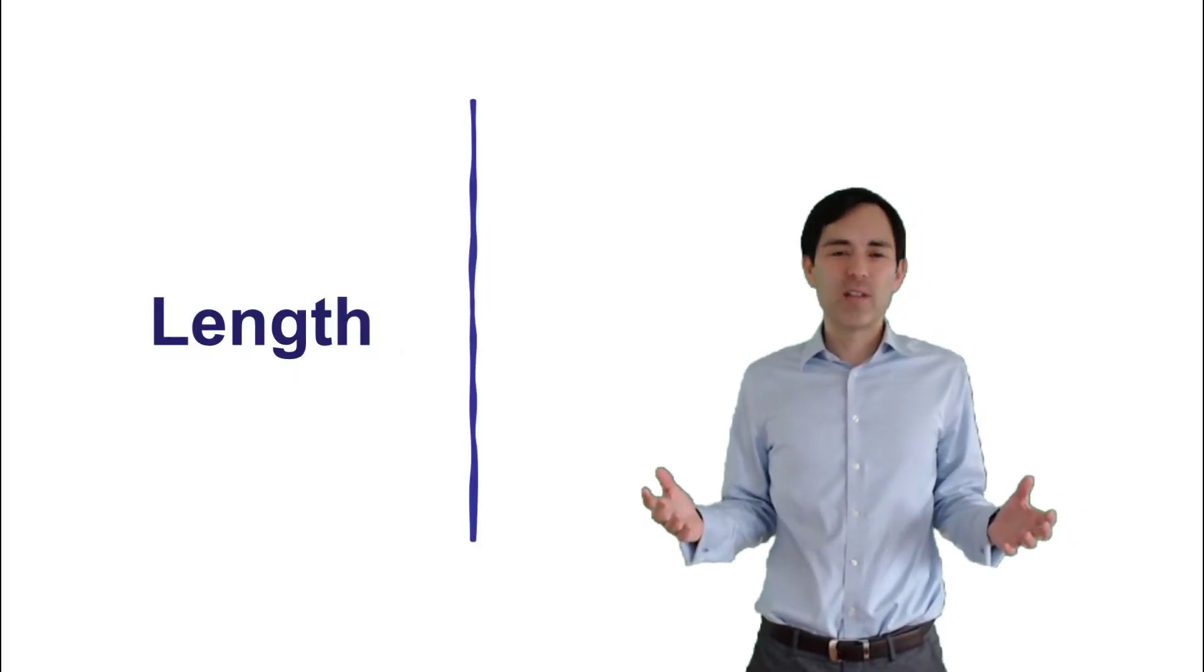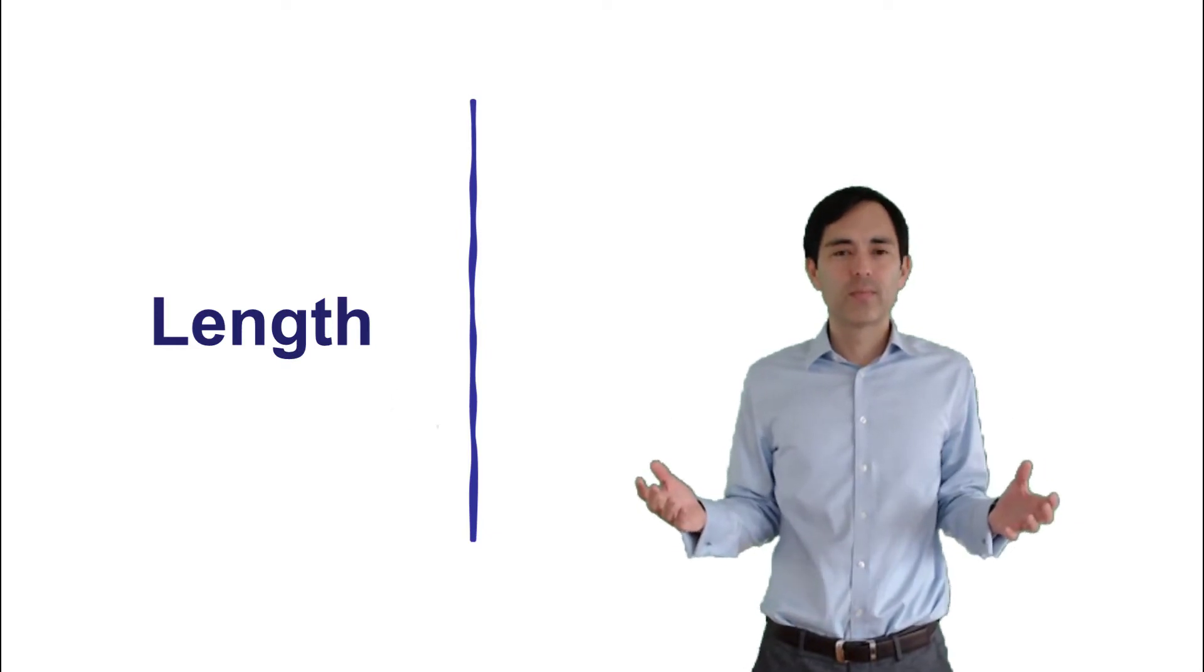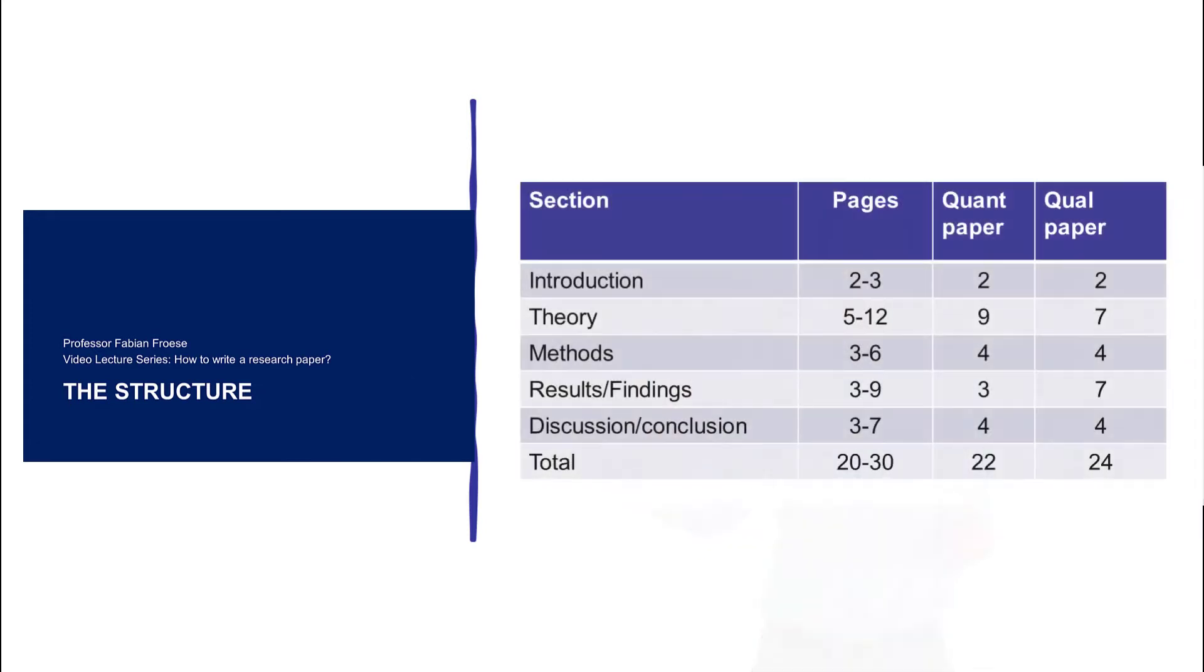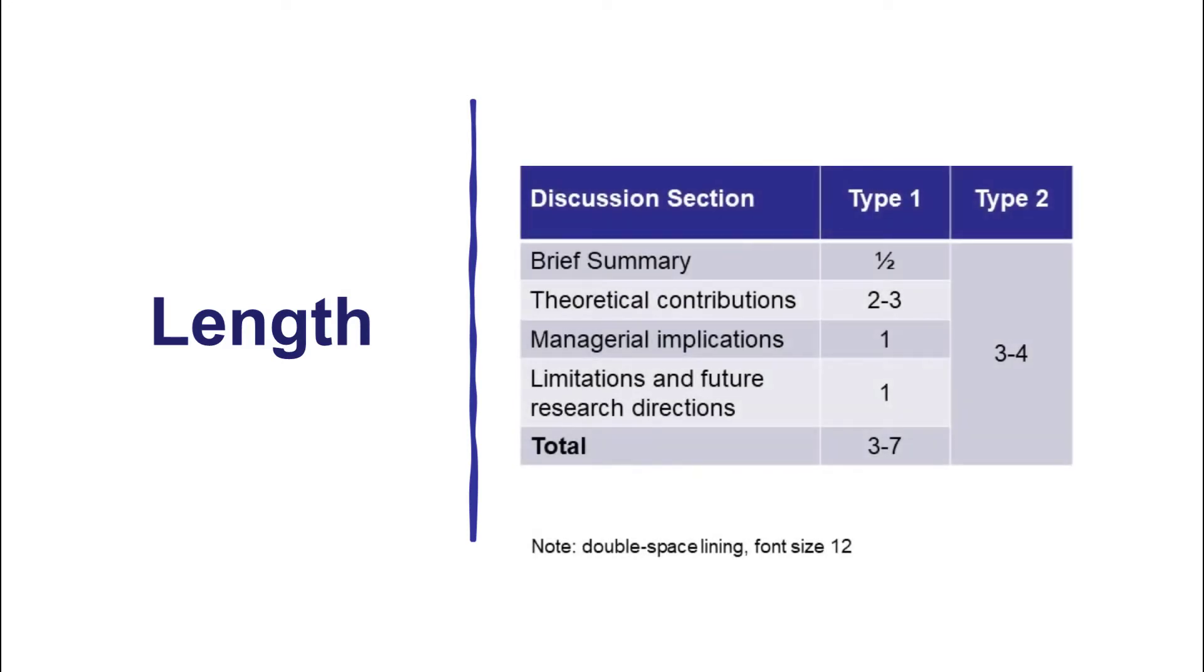Then, I think what would be also interesting to note, how long should these sections be? Remember, I had a video on the structure of a research paper. But I gave you some rough ideas. Now, let's say three to seven pages would be the typical length of a discussion section.